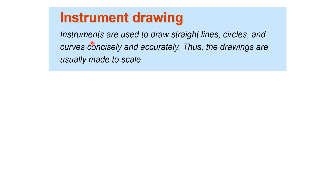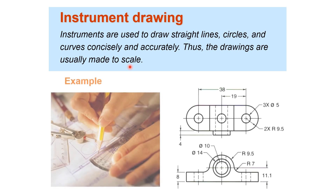Instrument drawing: instruments are used to draw straight lines, circles, and curves concisely and accurately, and drawings are usually made to scale. Here the same sketch has been drawn using instruments. You can see that proper dimensions are also mentioned — for example, the diameter of the inner and outer circles, and three holes of diameter 5.